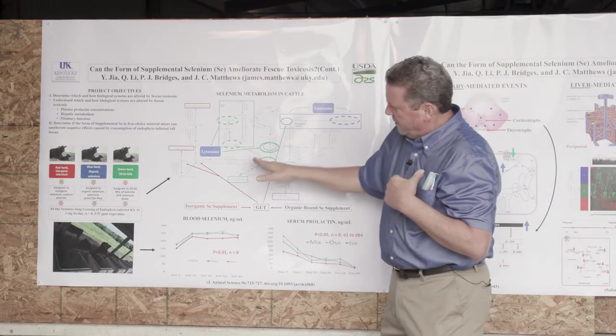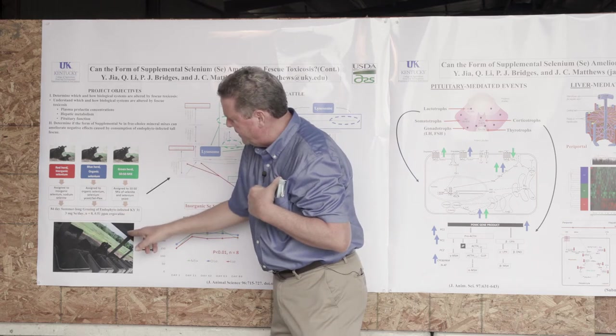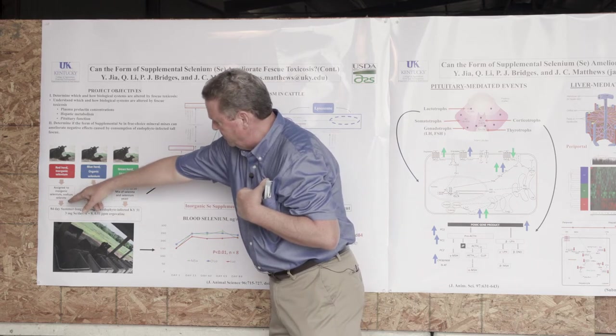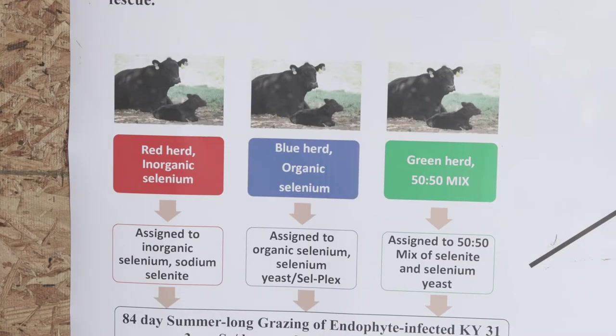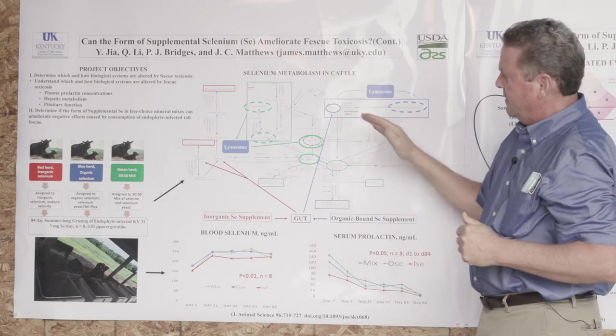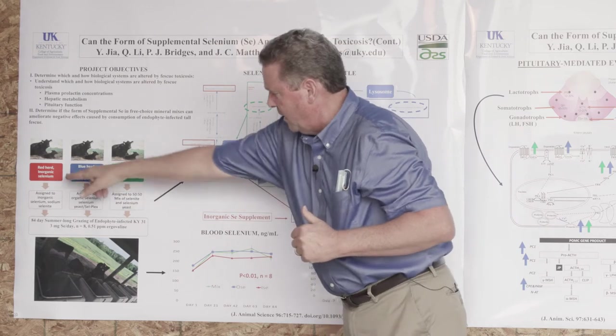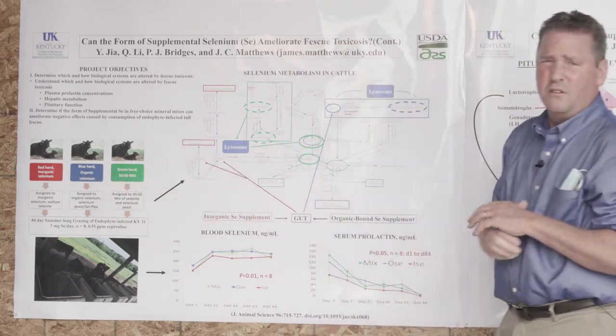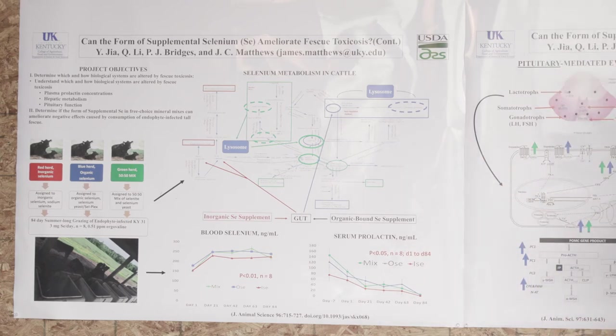In our trial then, we are looking at calves, how do they perform on tall fescue raised from red, the inorganic, driving this pathway, versus the blue, driving this pathway, versus calves that have developed on the green, where both of them are happening. And we're asking, does this preparation help one or any of these do better on the endophyte-infected tall pasture fescue?